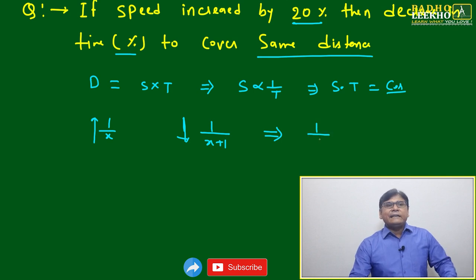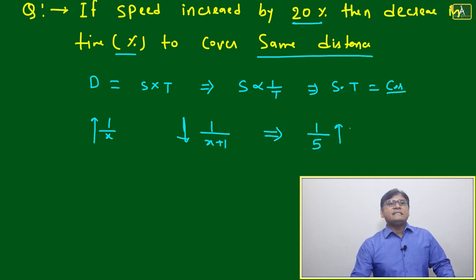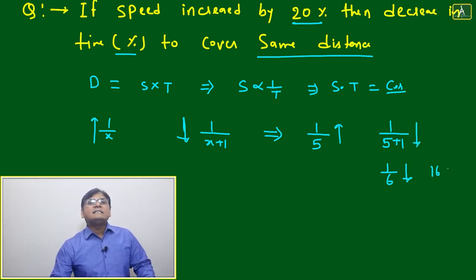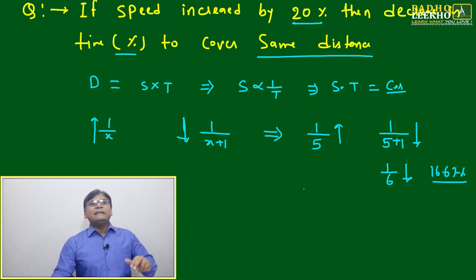It is increased by 1/5, so it will decrease by 1/(5+1), which equals 1/6. One-sixth decrease means 16.67 percent decrease. It will decrease by 16.67 percent.